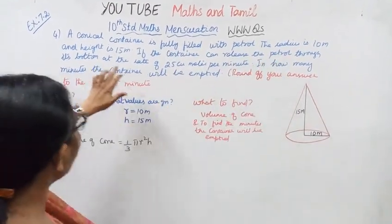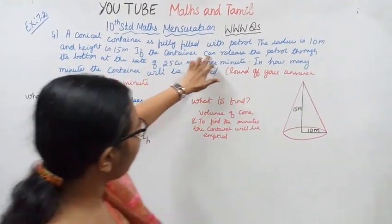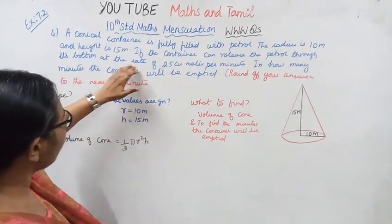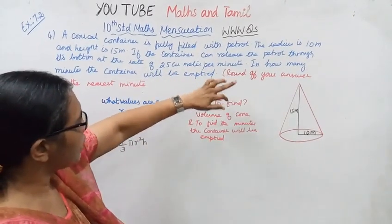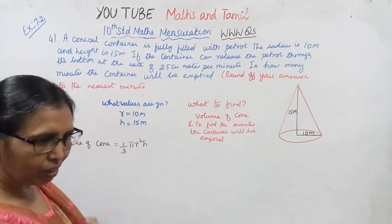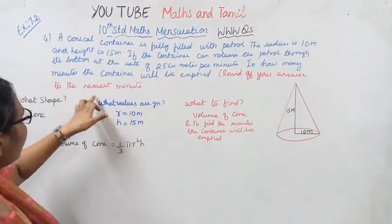The radius is 10 meters and height is 15 meters. If the container can release the petrol through its bottom at the rate of 25 cubic meters per minute, in how many minutes the container will be emptied? Round off your answer to the nearest minute.